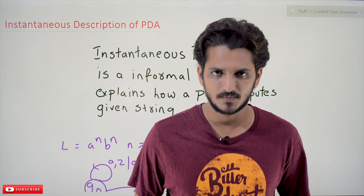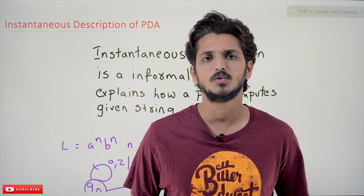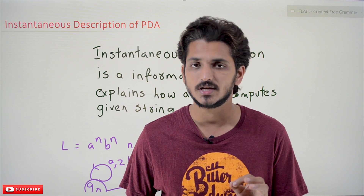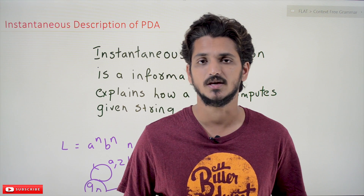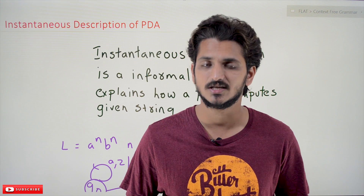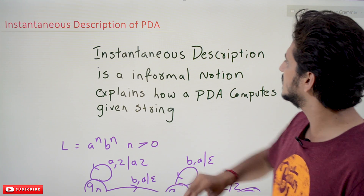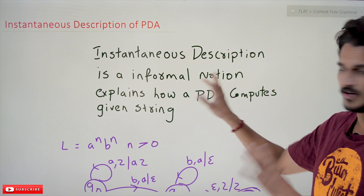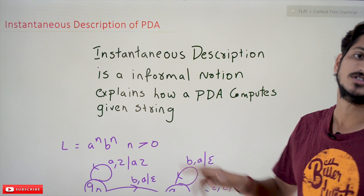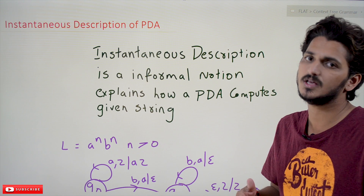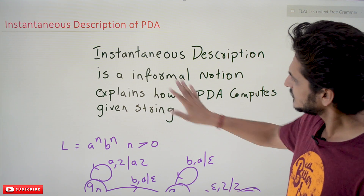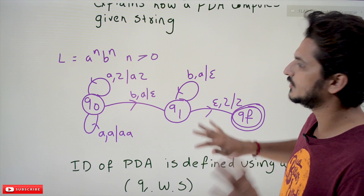Welcome to Learning Monkey. I am Raghu. In this class we will discuss instantaneous description in pushdown automata. In previous classes we gave a good intuition about pushdown automata — please watch that class and come back. The same example we are going to discuss here; the link for the playlist is provided in the description. Instantaneous description is an informal notation that explains how a pushdown automata computes the given string.